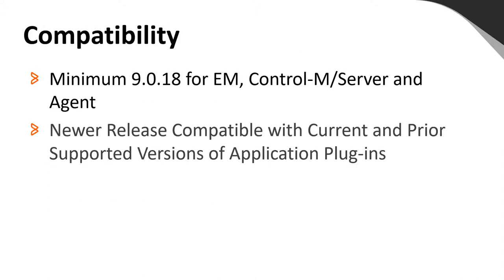Regarding compatibility, as long as you have a minimum version of 9.0.18 for Control-M Enterprise Manager, Control-M Server, and Control-M Agent, the Application Pack can be deployed. The application pack itself does not have to be the same version as the Control-M agent. For example, if you have a 9.0.18 agent, you could deploy an application pack of version 9.0.19. Any exceptions to these rules will be contained in the release notes, which we encourage you to read before performing an installation.